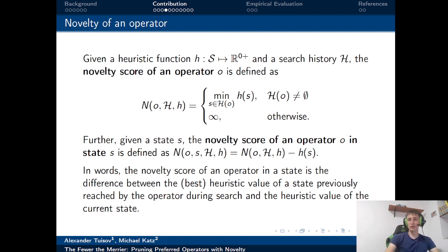We can also speak about the novelty score of an operator in a particular state, for example state s, and we define it as the novelty score of an operator in general minus the heuristic value, the underlying heuristic value of this particular state s.